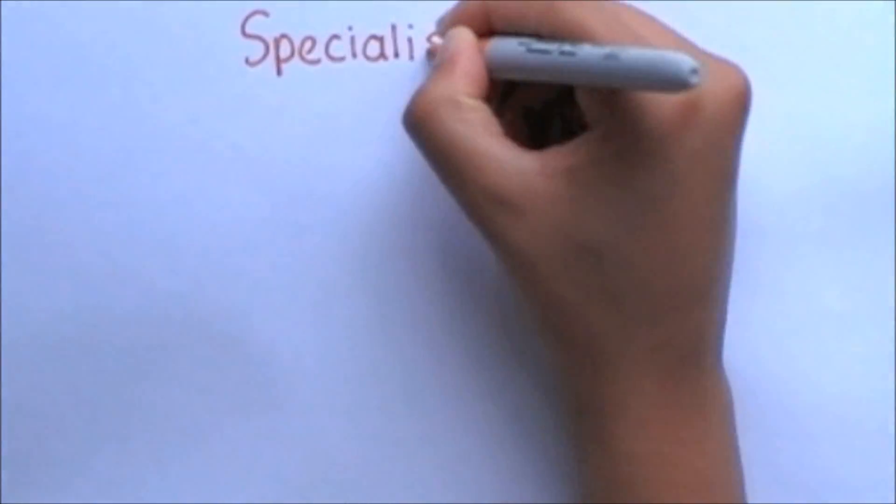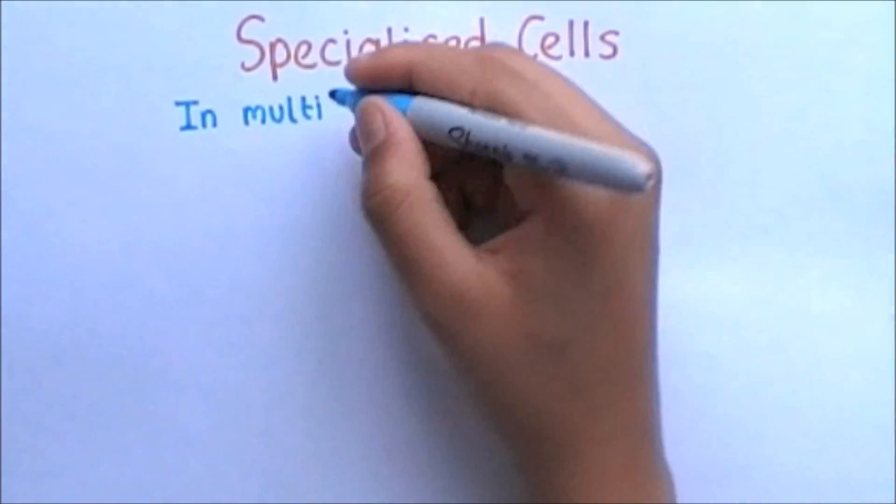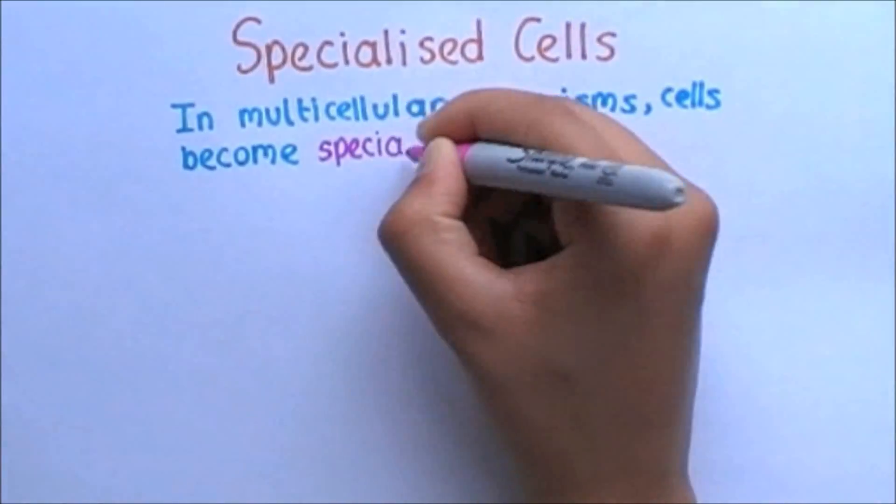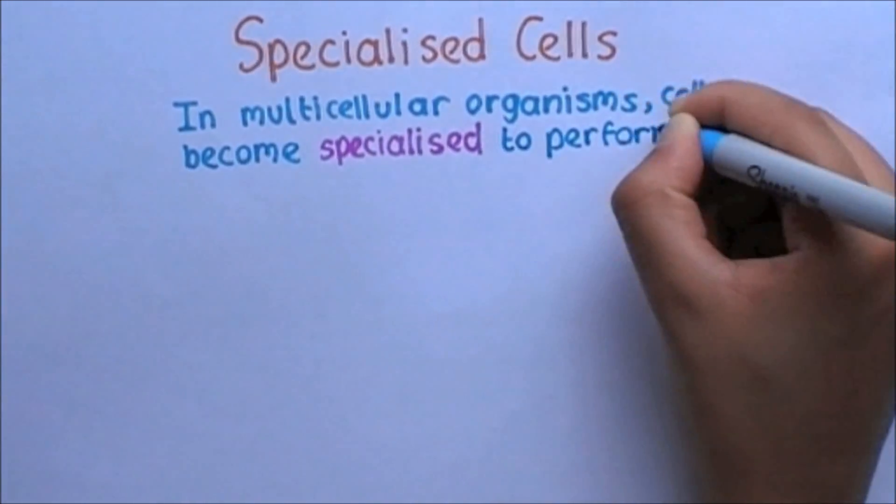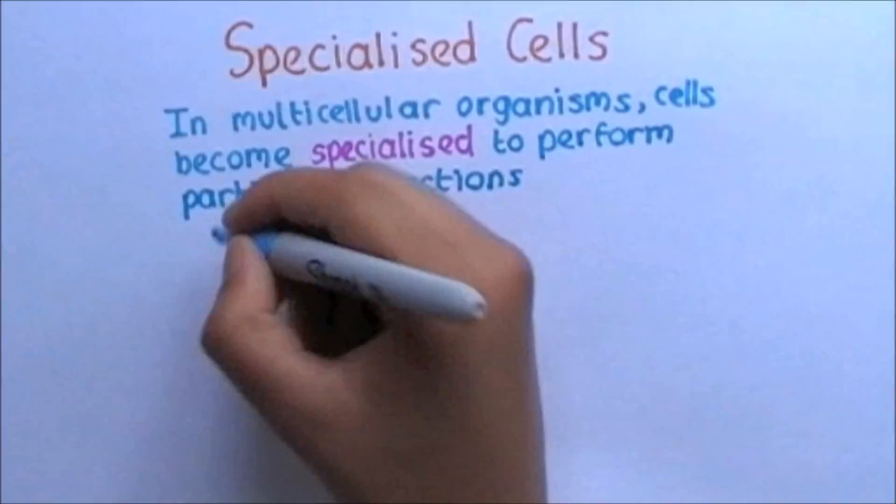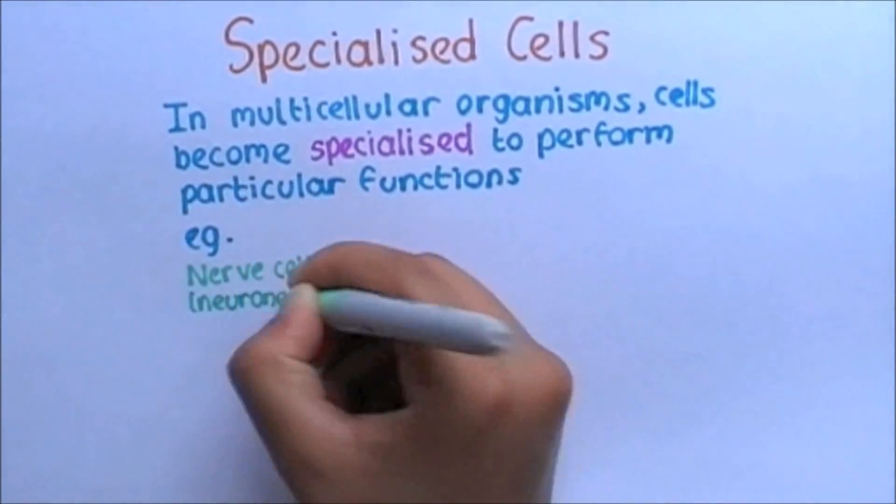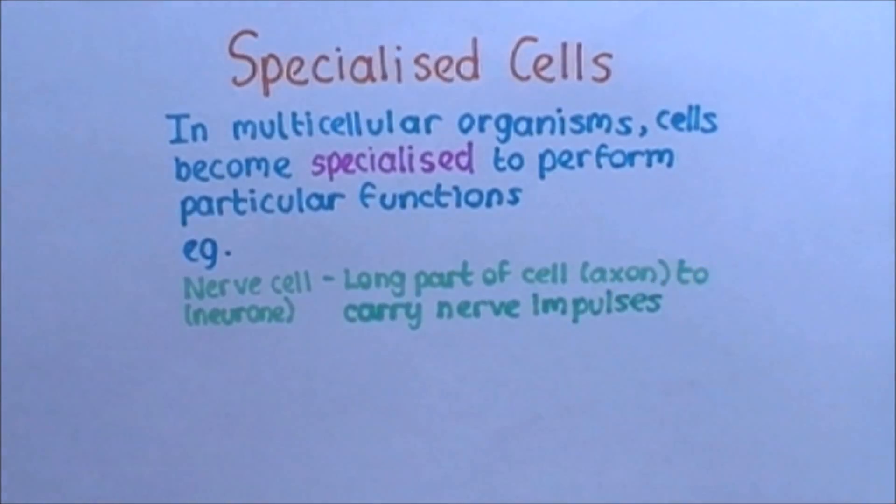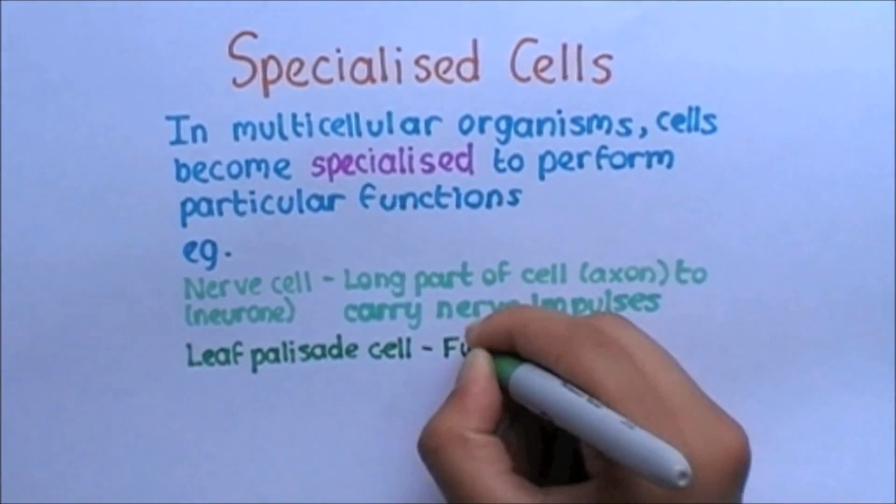We can put aside the unspecialized cells now and focus on the ones which are specialized. In multicellular organisms, cells become specialized to perform particular functions. For example, a nerve cell, which has a long part of the cell to carry nerve impulses, and there's the leaf palisade cell, which is packed full of chloroplasts for photosynthesis.